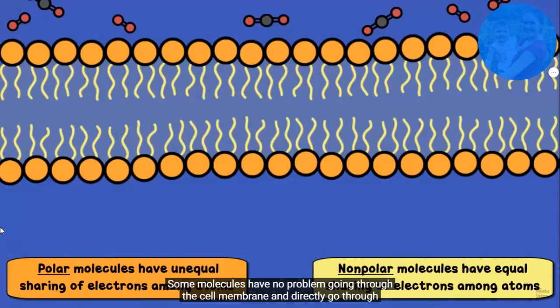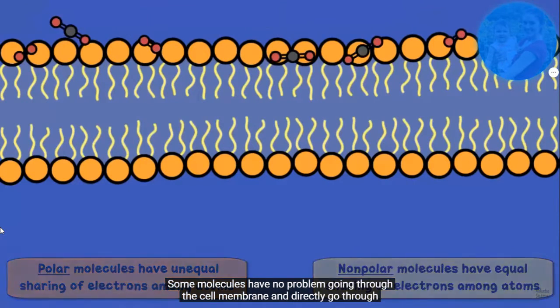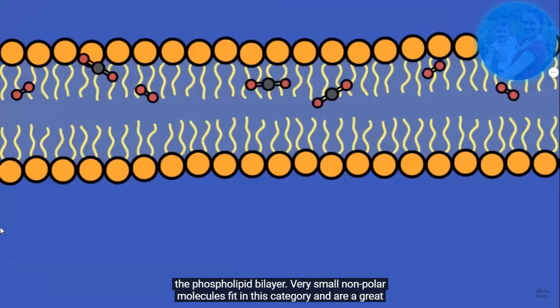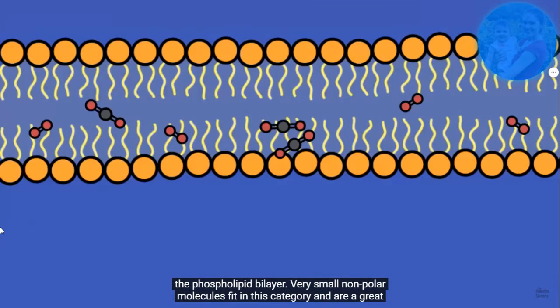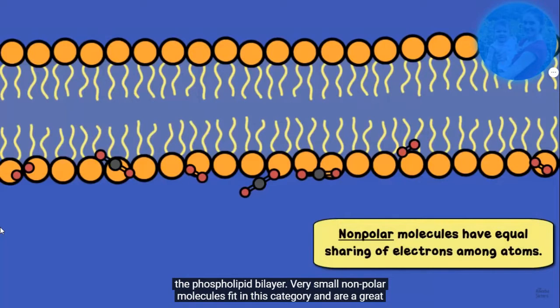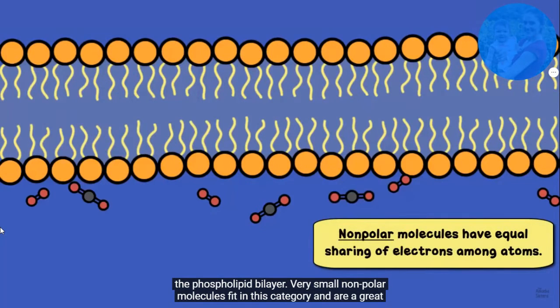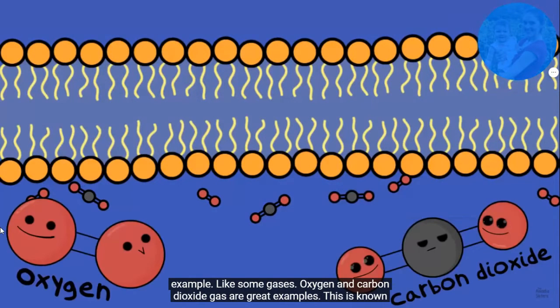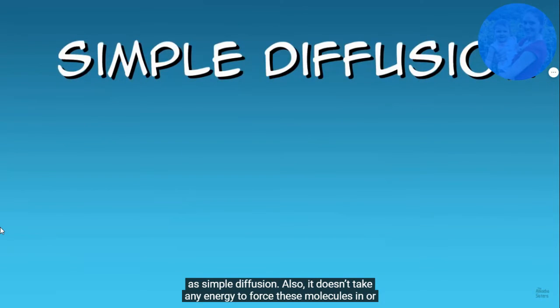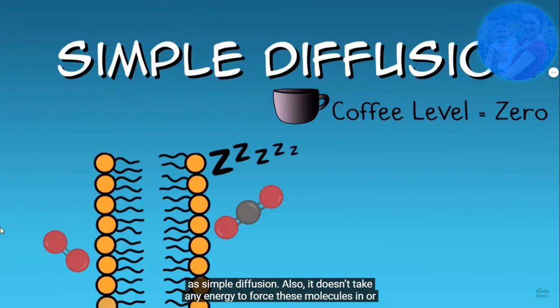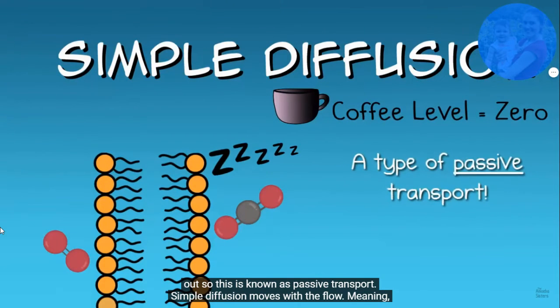Some molecules, they have no problem going through the cell membrane, and they directly go through the phospholipid bilayer. Very small, non-polar molecules, they fit in this category. They're a great example. Like some gases, oxygen and carbon dioxide gas, those are great examples. This is known as simple diffusion. Also, it doesn't take any energy to force those molecules in or out, so it's known as passive transport.